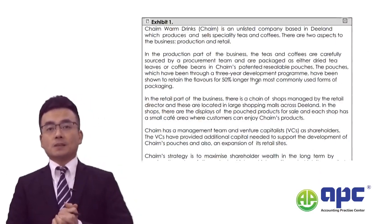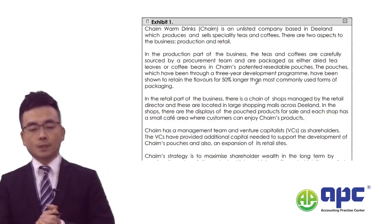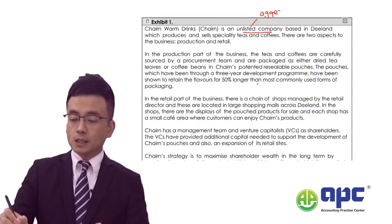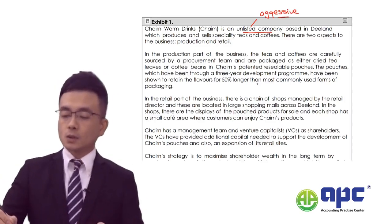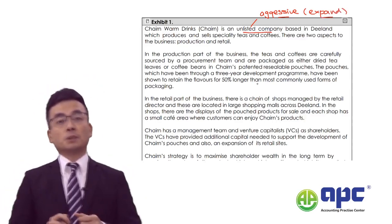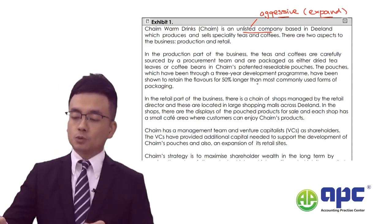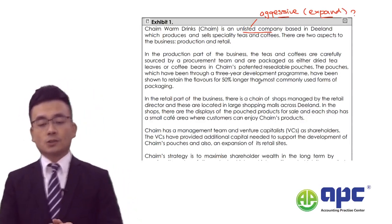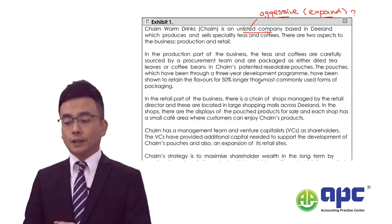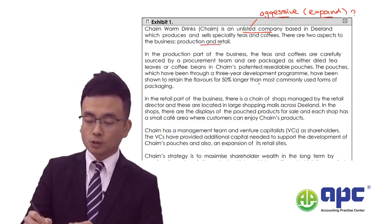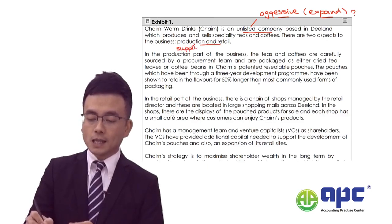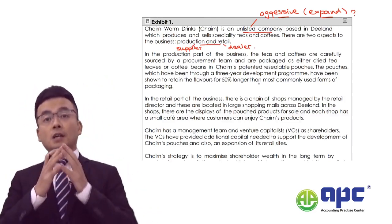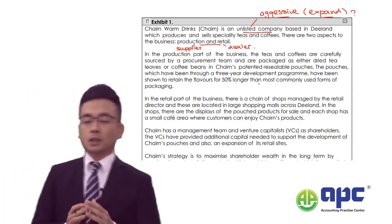Let's read through Exhibit 1 before answering the first requirement. We are given the case as an unlisted company — I would say that may be a bit aggressive. You can expand the business, increase revenue potentially, and finally get listed; the expansion option may be one of the options in our pocket. The company is based in a country called Dealums, which produces and sells specialty teas and coffees. There are two aspects to the business — production and retail — so it controls both the upstream and downstream supply chains.